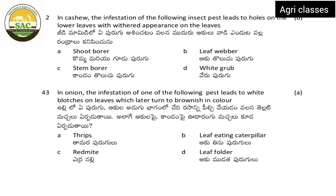Next: in cashew, the infestation of which insect pest leads to holes on the lower leaves with withered appearance? Options are cashew stem borer, leaf webber, or white grub. The correct answer is cashew leaf webber. Next: in onion, the infestation of which pest leads to white blotches on the leaves which later turn brownish in color.